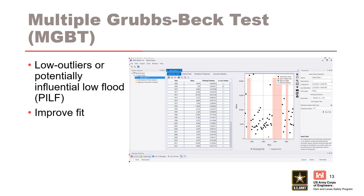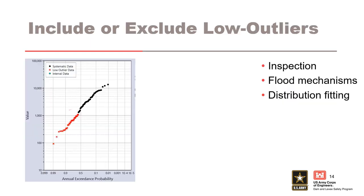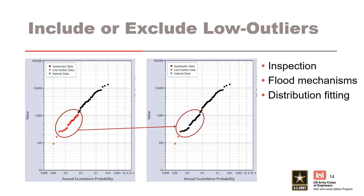RMC Best Fit only includes systematic data in the outlier test. Low outliers often reflect physical processes that are not relevant to the processes associated with large floods, and consequently may not reveal much about the upper right-hand tail of the frequency curve. However, because the effect of the low outlier test is that it replaces systematic data with a perception threshold, judgment should be used whether to accept the test results.